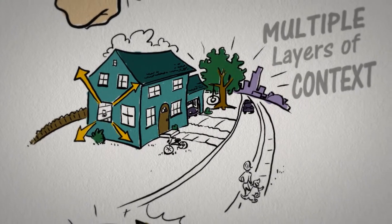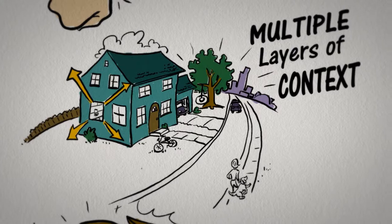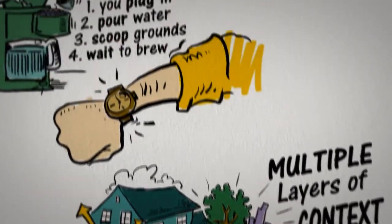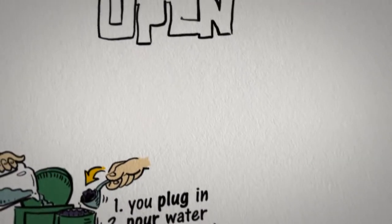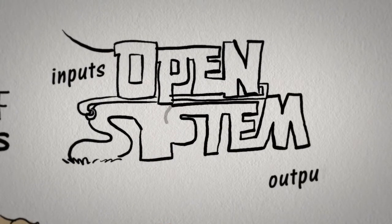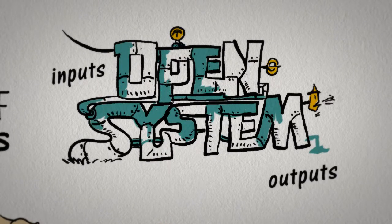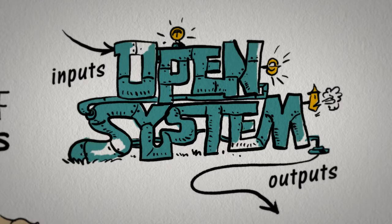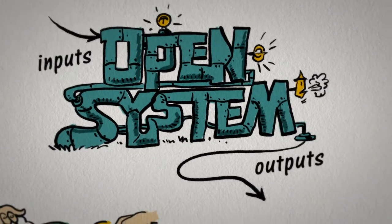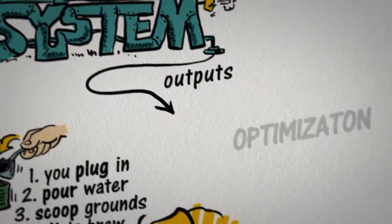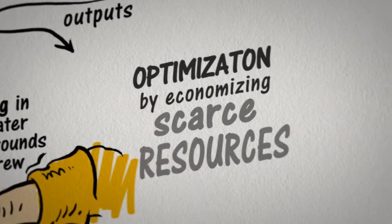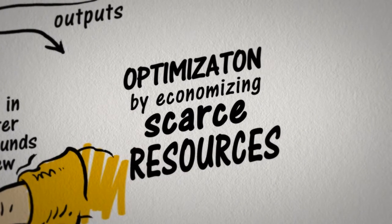This system is also called an open system, which has inputs and outputs. The input is converted to the output through a process. We can optimize the system by economizing resources that are scarce.